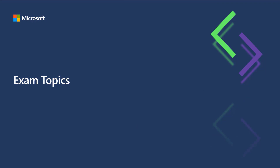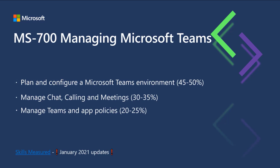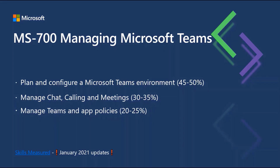Let's get started with our exam topics. For MS700 Managing Microsoft Teams, you will need to be able to plan and configure a Microsoft Teams environment, which makes up 45 to 50 percent of the exam content. You will also need to be able to manage chat, calling, and meetings, which makes up 30 to 35 percent, as well as manage Teams and app policies, which makes up 20 to 25 percent of the content.